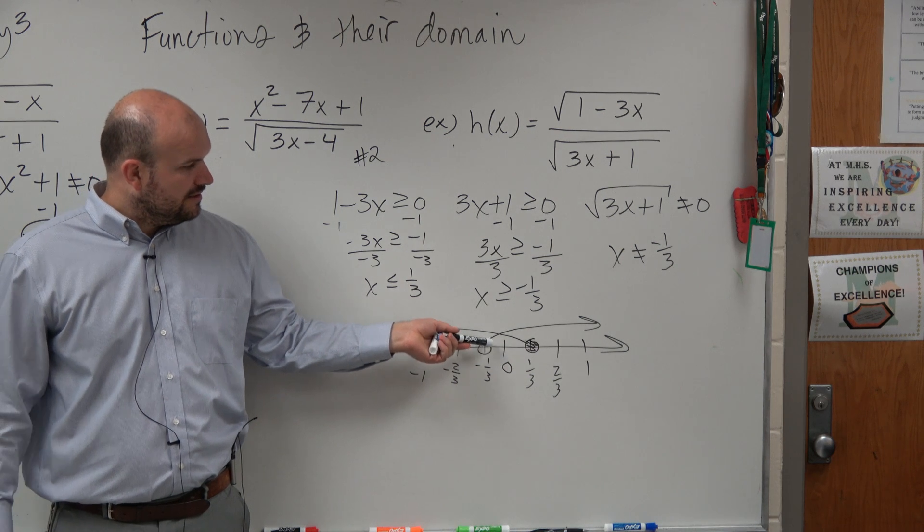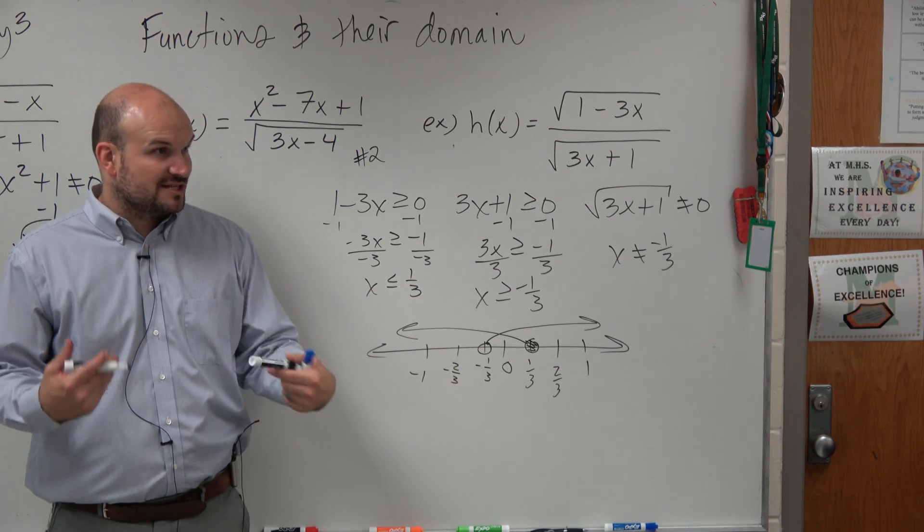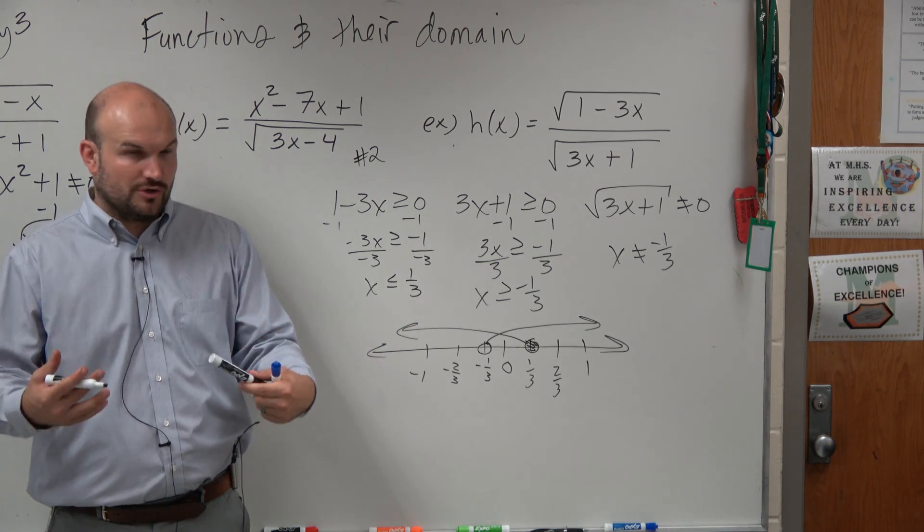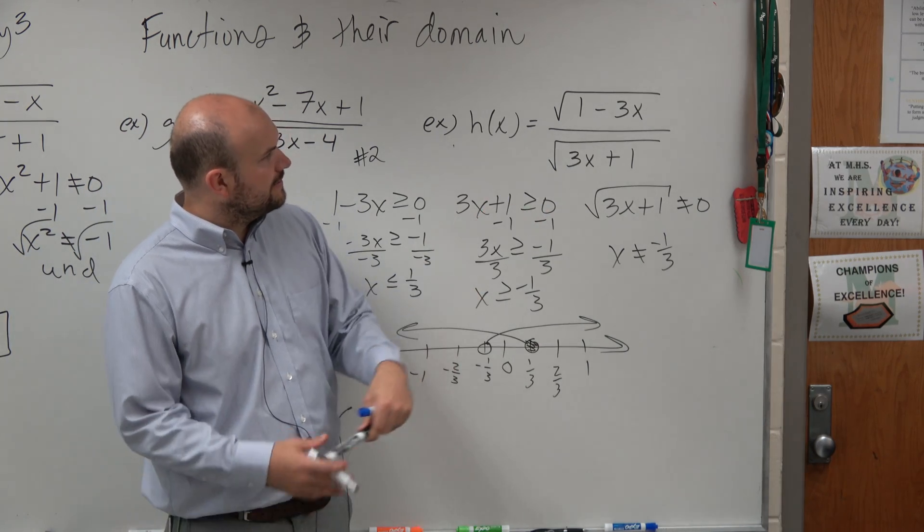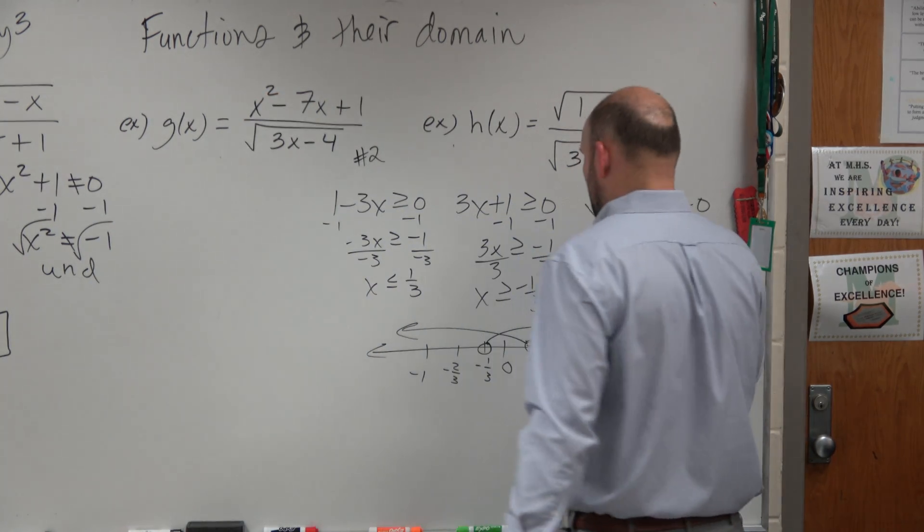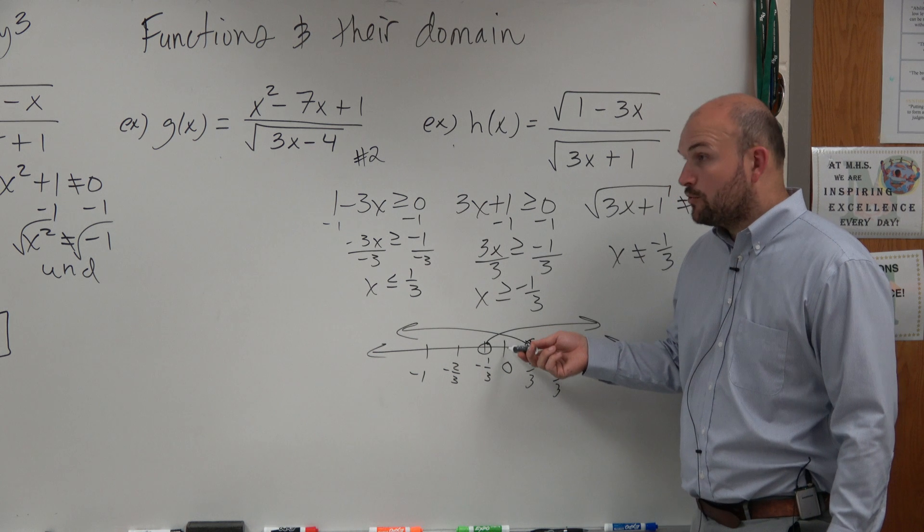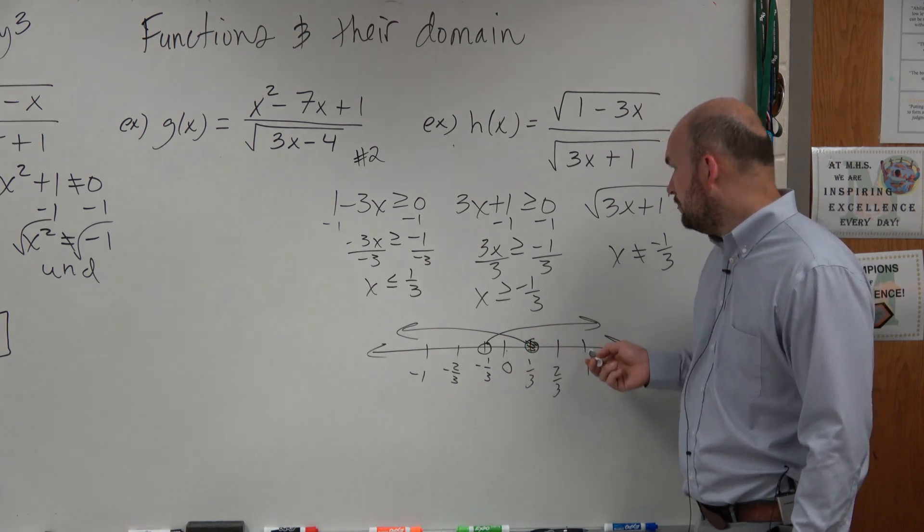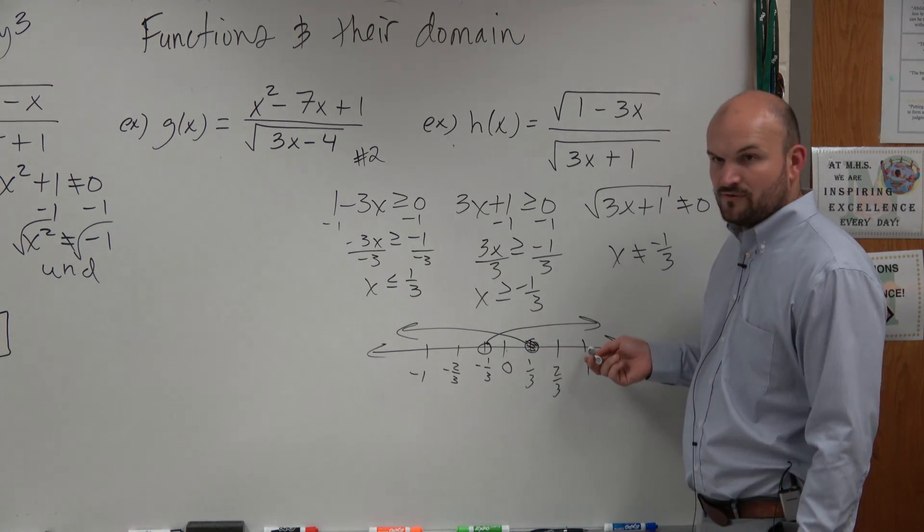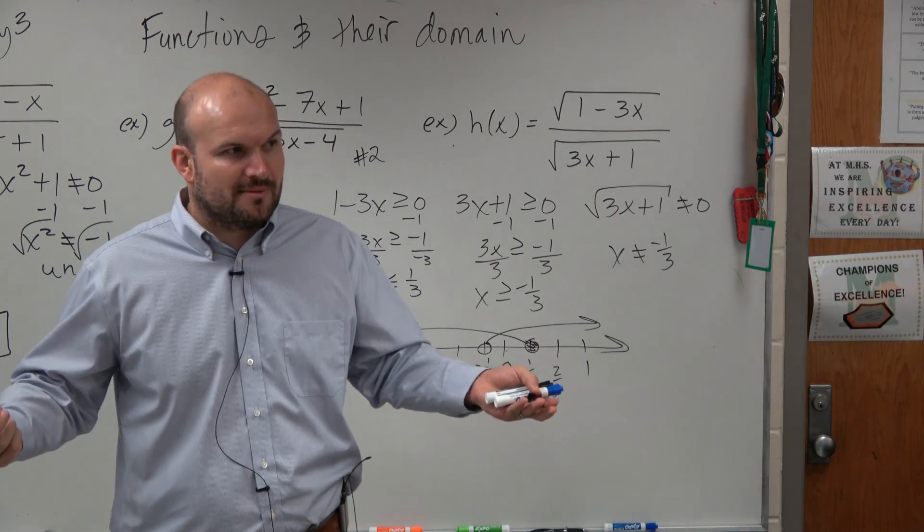And then, the domain is only true for when they're both true. Like for instance, 0. 0 works for both of them, right? But let's say 1. 1 works for one of them, but 1 doesn't work for the other, right? Do you guys see? So it has to be true for both of them.